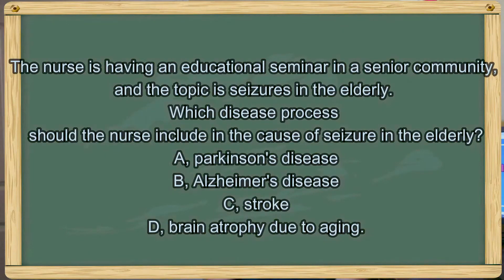The nurse is having an educational seminar in a senior community and the topic is seizures in the elderly. Which disease process should the nurse include as a cause of seizures? A. Parkinson's disease. B. Alzheimer's disease. C. Stroke. Or D. Brain atrophy due to aging.